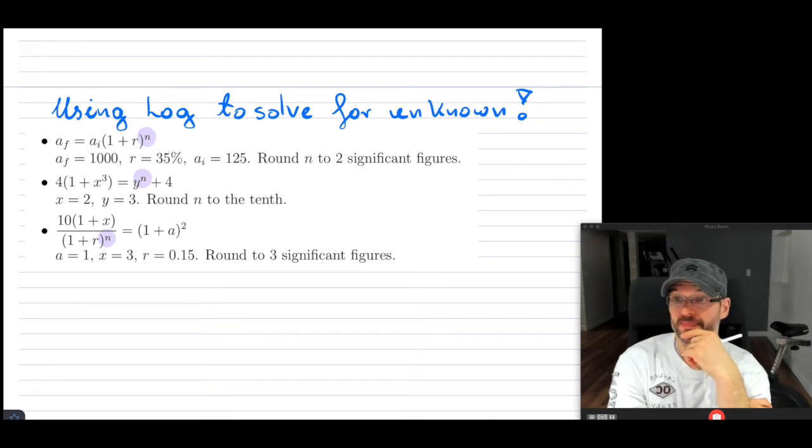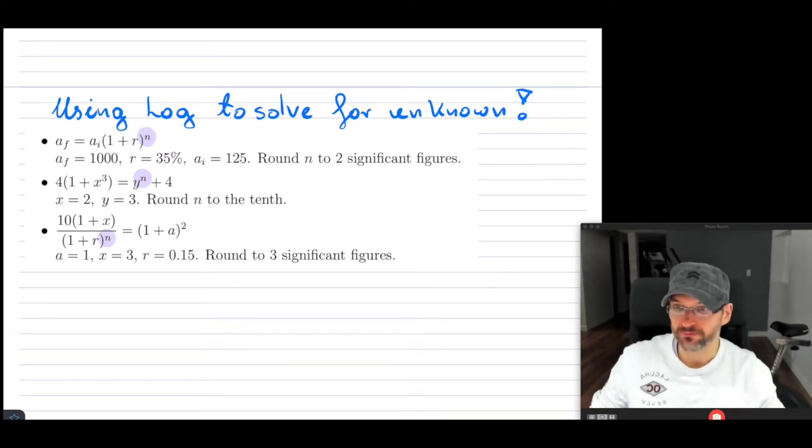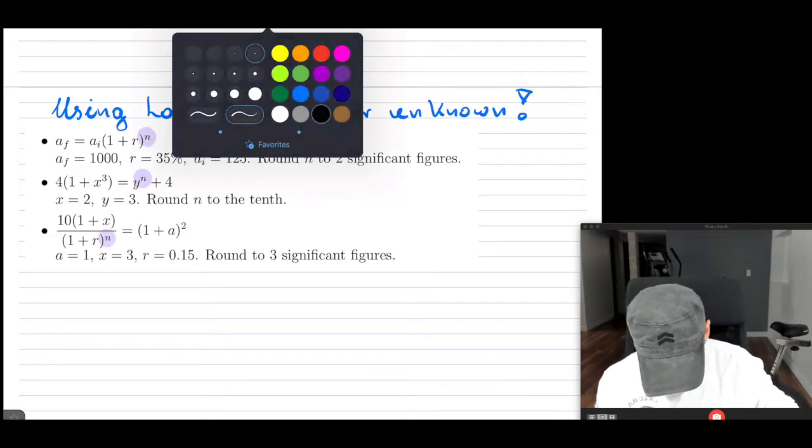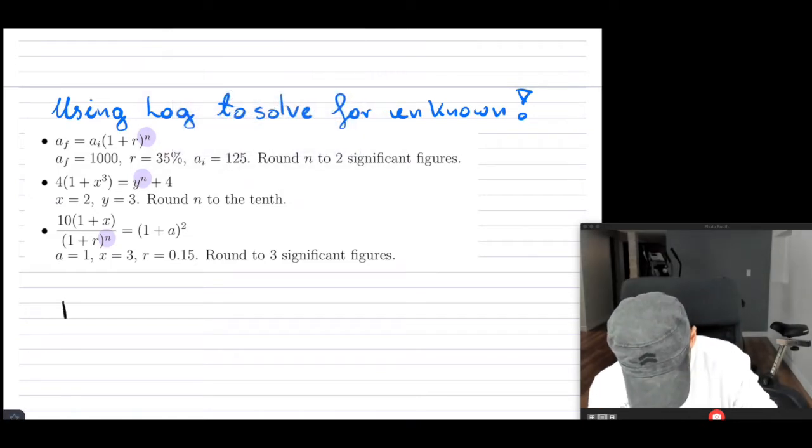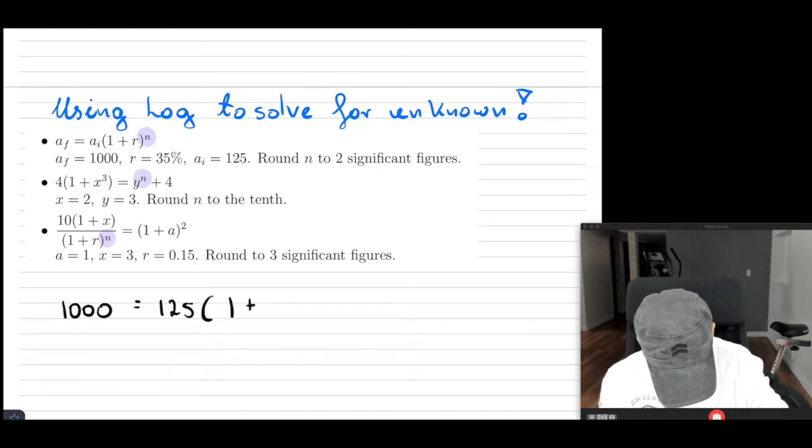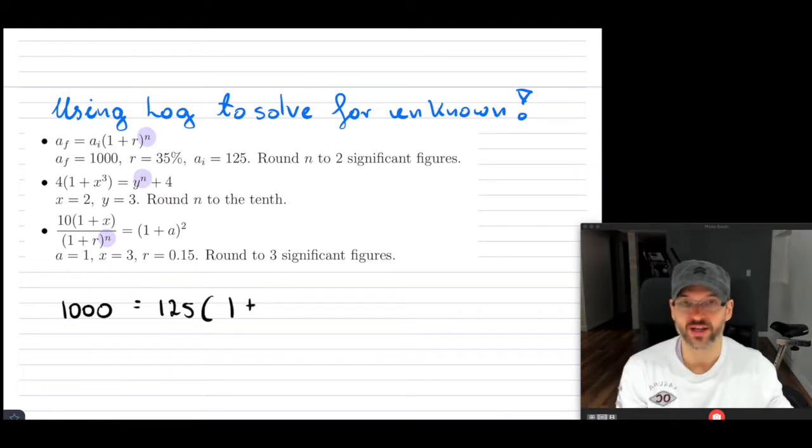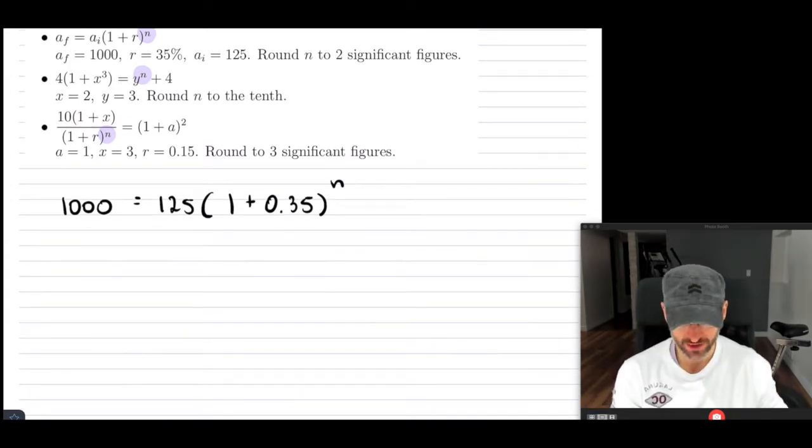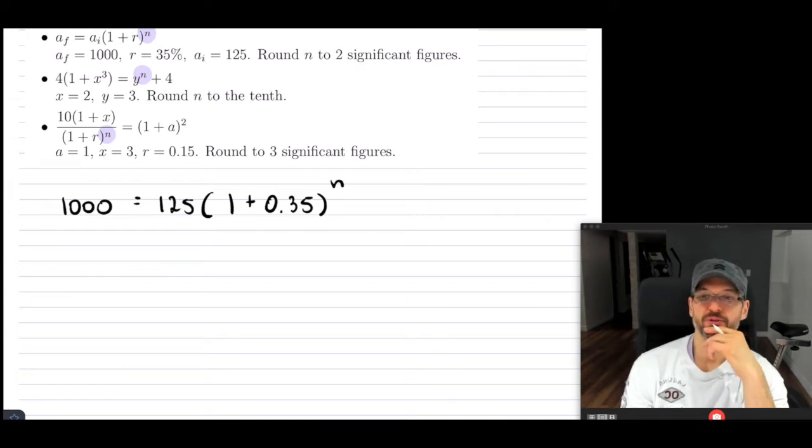So let's do it. Example one. I'm going to substitute the numbers in there for us. So we have AF, so that is 1,000 equals to AI which is 125, 1 plus R is 35%, so you have to turn that back into decimal, so 0.35. And then we have N.